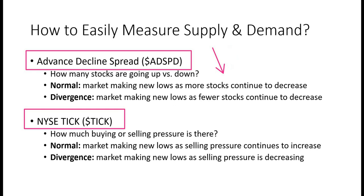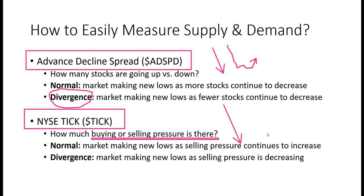But what happens in a scenario where the stock market is making new lows, but the number of stocks going down has actually dwindled, or has started to increase even? Well, that's a divergence, and a divergence that we can take advantage of. The same concept applies with the NYSE TIC. The TIC helps us measure how much buying or selling pressure there is and how strong that pressure is. In a normal market, as the market makes new lows, we would expect the selling pressure to continue to increase. But if instead that selling pressure has actually started to stop, or buying pressure has come in fairly strong, that's a divergence we could take advantage of.